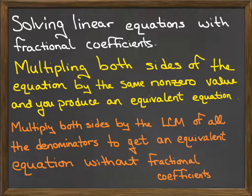If we choose the least common multiple of all of our denominators and use that as the value we multiply both sides of the equation by, we will end up with an equation without fractional coefficients.